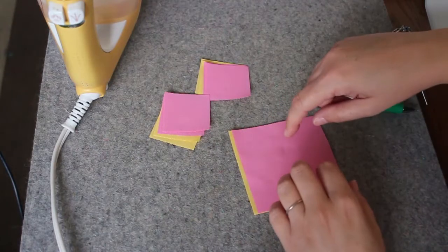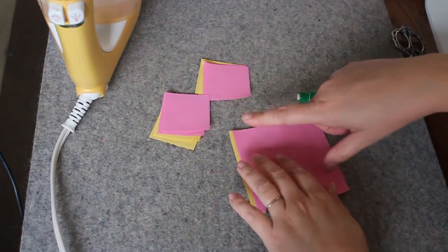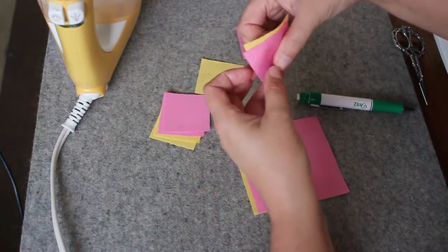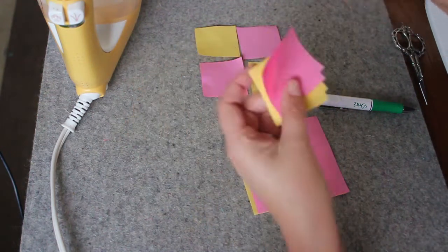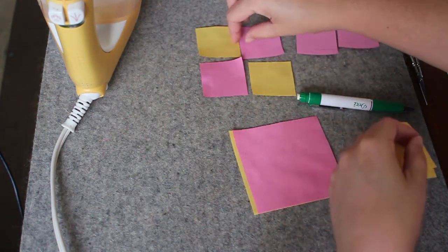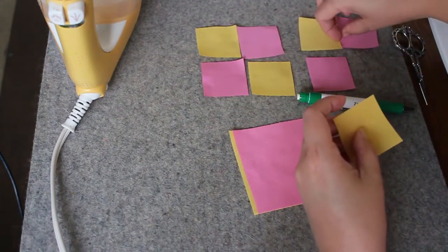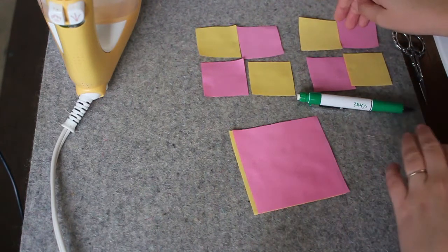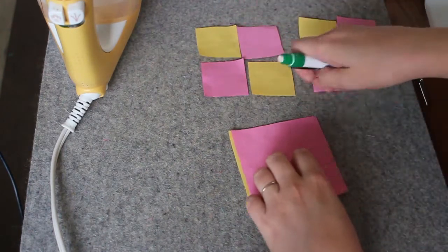To stitch up our hourglass block we need to make two different units. These large pieces are going to become two half square triangle units and these small pieces are going to become four patches. So to make our four patches we're going to stitch these two together and these two together and same with this set. Once those are stitched then we'll press towards the pink and then we'll stitch the top and bottom together and we'll have our four patches. Super simple.